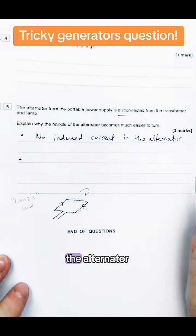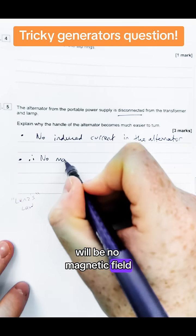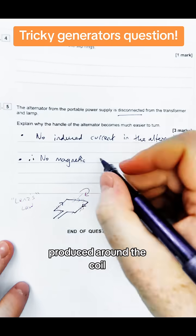So there's no induced current in the alternator. The idea is therefore there'll be no magnetic field produced around the coil. So if there's no magnetic field produced around the coil...